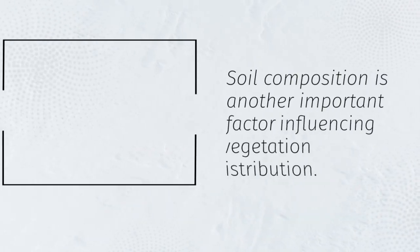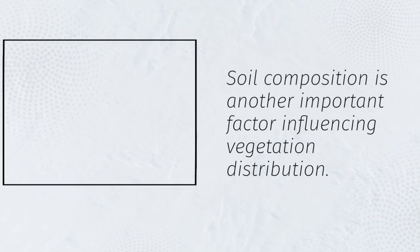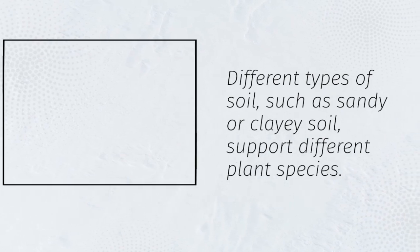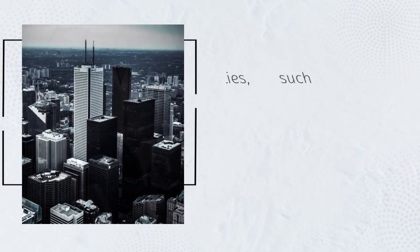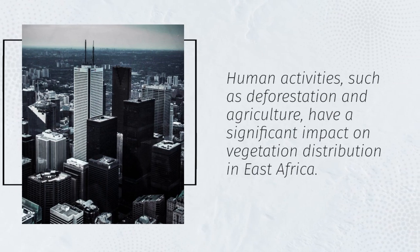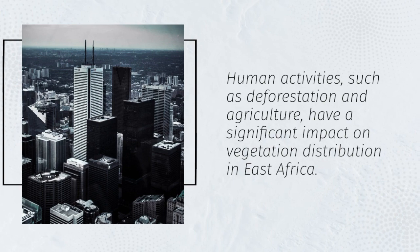Soil composition is another important factor influencing vegetation distribution. Different types of soil, such as sandy or clayey soil, support different plant species. Human activities, such as deforestation and agriculture, have a significant impact on vegetation distribution in East Africa.